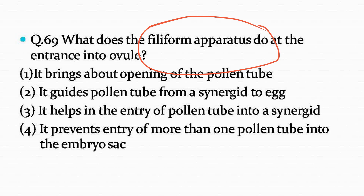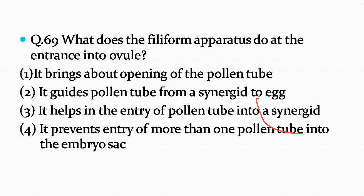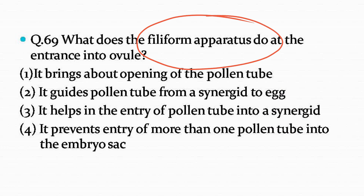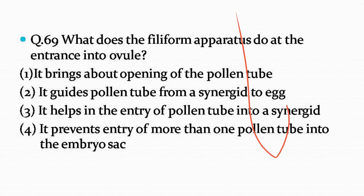The correct answer is option number three — it helps in the entry of the pollen tube into the synergid. If you remember the structure of an ovule, this is where the synergid was, and these finger-like structures are called the filiform apparatus. They release certain chemicals which help in establishing a continuous dialogue between the pollen tube and the synergid, hence the pollen tube enters the synergid very easily.